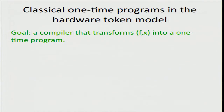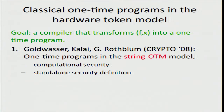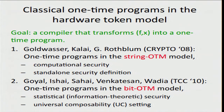One-time memories are compelling in the cryptographic literature because they're fairly generic objects and can be used and constructed independently of the protocol or the inputs used by the parties. So they could be mass produced and distributed in advance and then used in a variety of different protocols. If we have one-time memories, how can we construct one-time programs from them? We'd like a compiler that can transform a public function f and the sender's input x into a one-time program — consisting of some software and these one-time memories. The first work in this area was presented at Crypto in 2008 and gave a computationally secure construction for one-time programs using string one-time memories. Then a couple of years later at TCC, a protocol was given that provided statistical UC security in the bit one-time memory model, using one-time memories that only needed to store single bits.